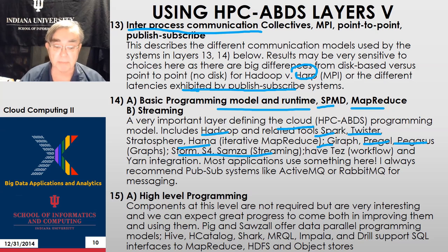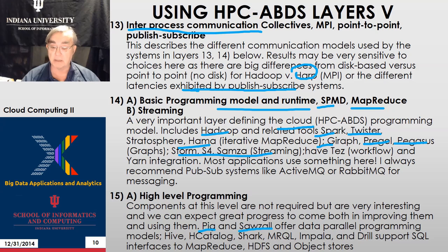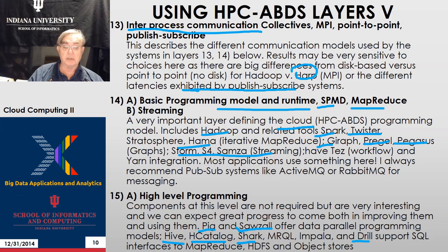Higher-level programming tries to provide better interfaces for users. Pig is one example of a data parallel model. Sawzall from Google is somewhat open source but key parts were missing. We have Hive and Shark, which are basically SQL on MapReduce, and Drill, which is SQL on NoSQL. These higher-level systems provide more convenient ways for users to access data stored efficiently, and allow extraction of that data in an automatic fashion.